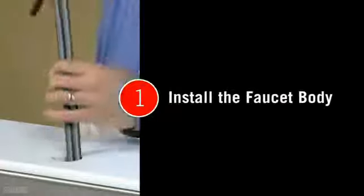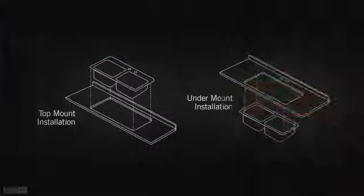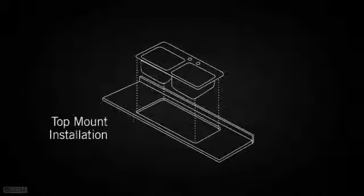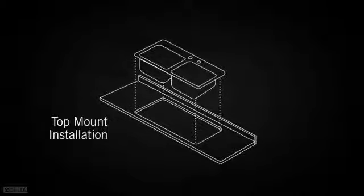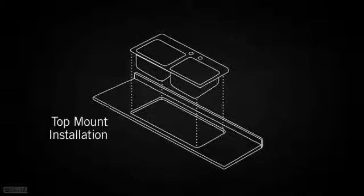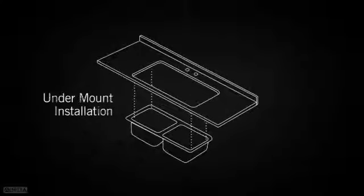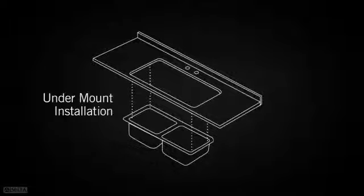The first step is installing the faucet body. The instructions for this step vary depending upon whether you have a top-mount or under-mount sink. The top-mount sink has a rim around the sink and has been set in on top of the counter. The mounting for an under-mount sink is not visible from above the counter and does not have a rim around the sink. This video will walk you through an under-mount installation. For top-mount installation instructions, refer to the Quick Start Guide or the Maintenance and Installation Guide.